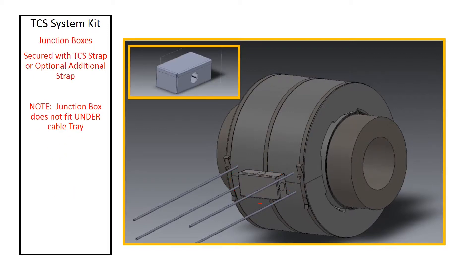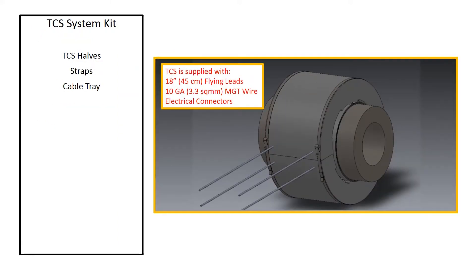Note that the junction box does not fit under the cable tray. TCS is supplied with 18 inch flying leads made of 10 gauge MGT wire.